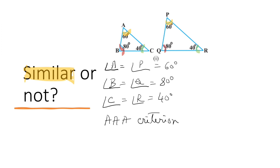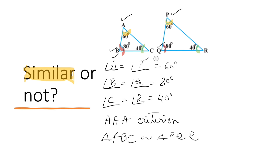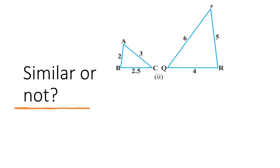Now let us write the triangles in symbolic form. The corresponding vertex of A is vertex P, corresponding vertex of B is vertex Q. So triangle ABC is similar to triangle PQR. Now let us solve the second part.